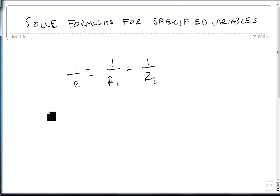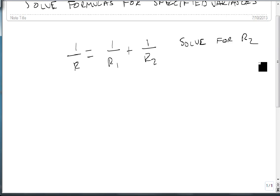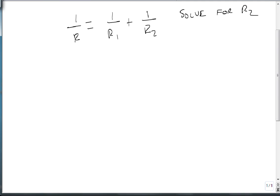We're going to start with this formula: 1 over r equals 1 over r1 plus 1 over r2. And we're going to solve for r2. The way we're going to do that is we're going to find our LCD. And our LCD is r times r1 times r2.